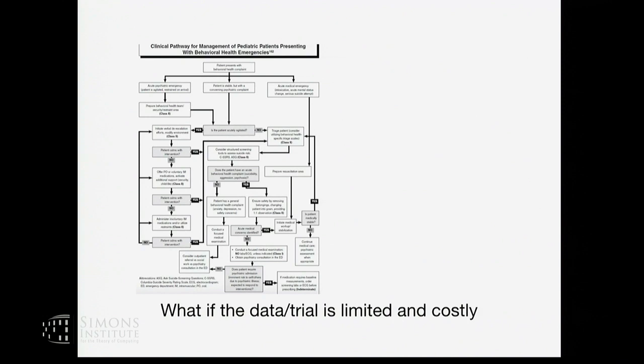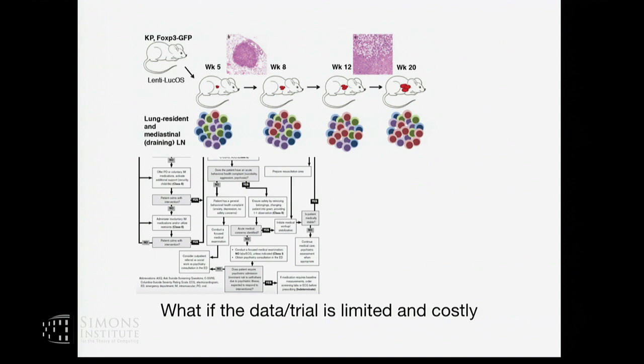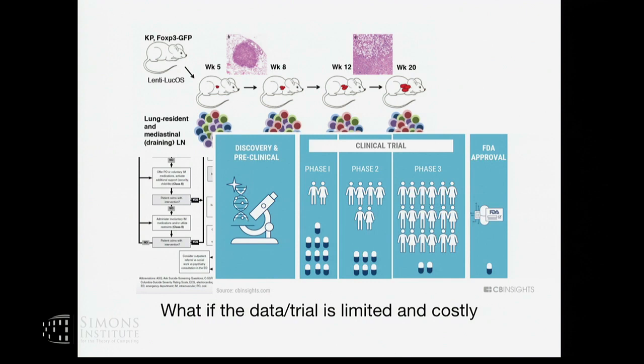Let's consider scenarios where we cannot do RL efficiently yet. For example, if we want to use RL to figure out the best clinical treatment, I wouldn't trust an RL algorithm at this stage — for every particular condition and group of patients, the amount of data available might be quite limited, and practical decisions are made based on domain expertise. Similarly, understanding how a single cell evolves requires collecting actual lab data, which is very costly, and in clinical trials each data point could be a human life.